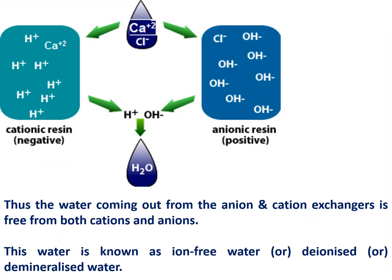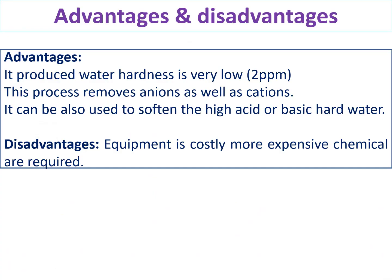In summary: cations are exchanged by the cation exchange resin, and anions are exchanged by the anion exchange resin. H⁺ ions released from the cation exchange resin and OH⁻ ions released from the anion exchange resin meet and form water. The final product water has no ions present.